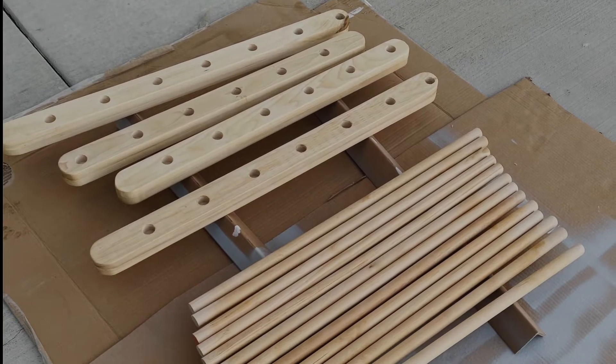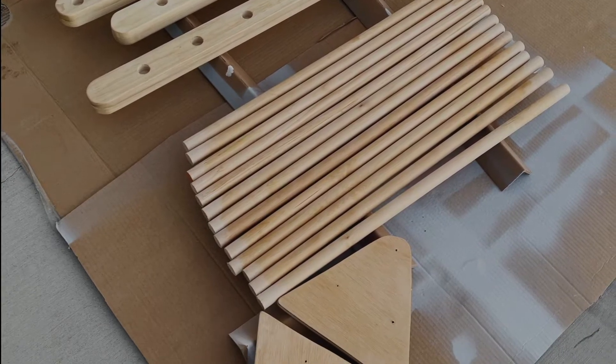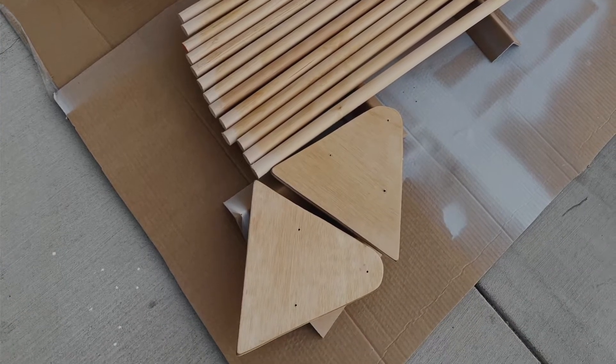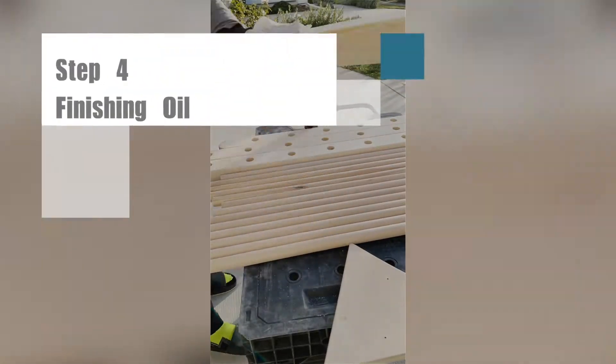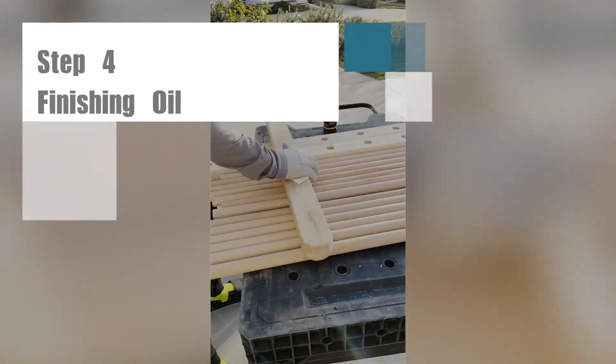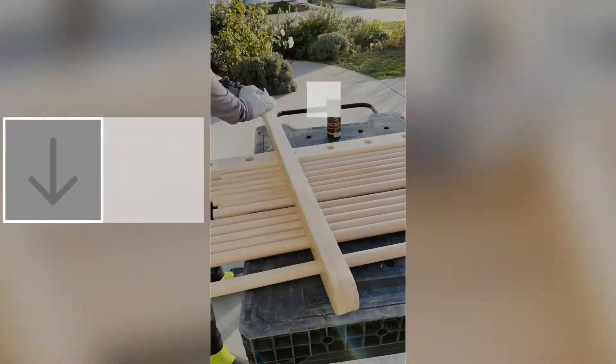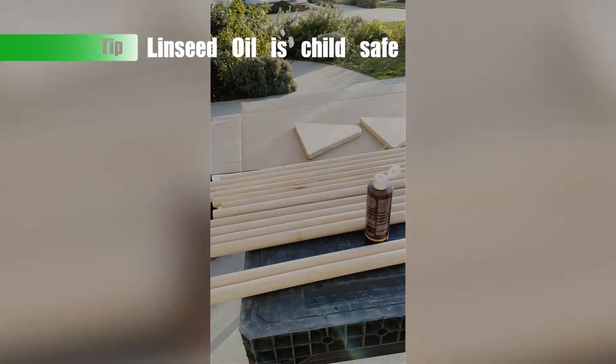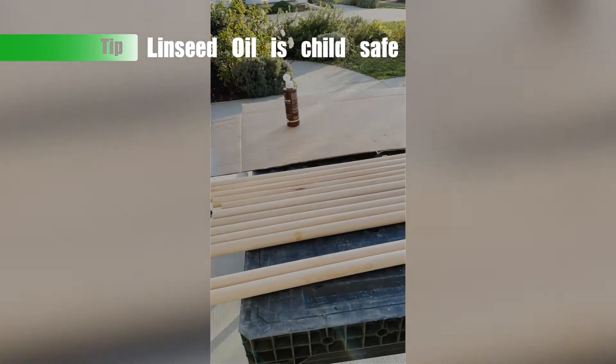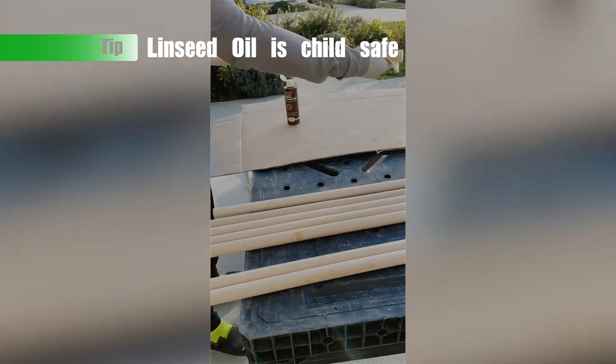And now we have our 3 components: the rails, the dowels, and the triangle. Time to assemble. Actually before assembling, you could actually do a finishing coat of linseed oil, which is safe for children to coat your Pikler triangle. This will help preserve the wood a little bit longer.